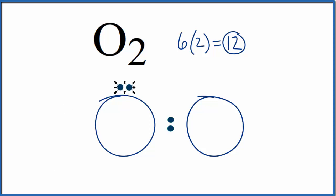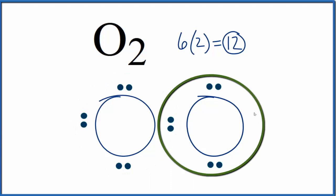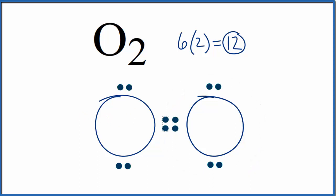At this point we've used up 12 valence electrons. This oxygen has eight valence electrons, that's an octet, but this one only has six. We can move these two here to the center so that they're shared. Now this oxygen has eight still, and this oxygen also has eight by sharing these two pairs of electrons.